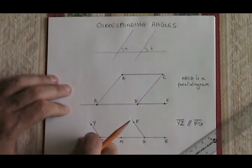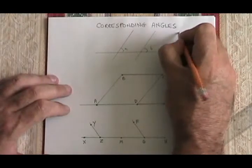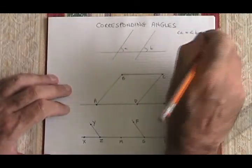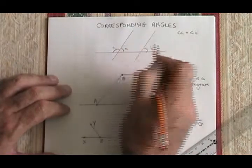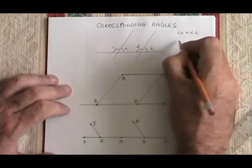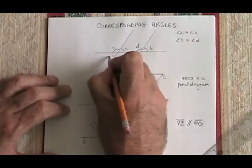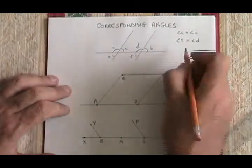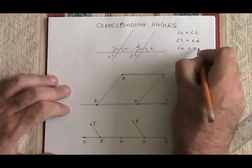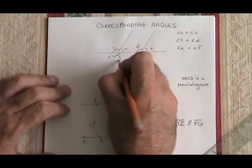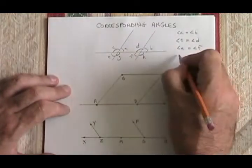Actually, when I drew those two lines, I created four sets of corresponding angles. I will list them. Angle A equals angle B. Angle C equals angle D. Angle E must be equal to angle F. And finally, angle G must be equal to angle H.